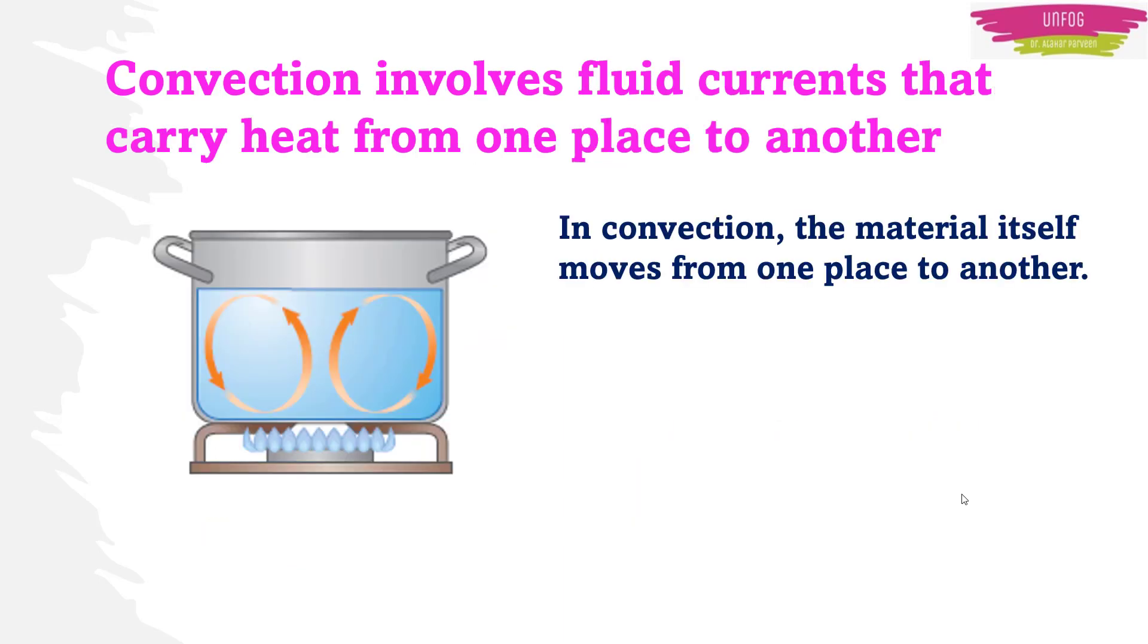Whereas in convection, the material itself moves from one place to another. For example, if your mom has put an utensil with water on the stove, it gets heated, right? But how and why? Here's the answer.